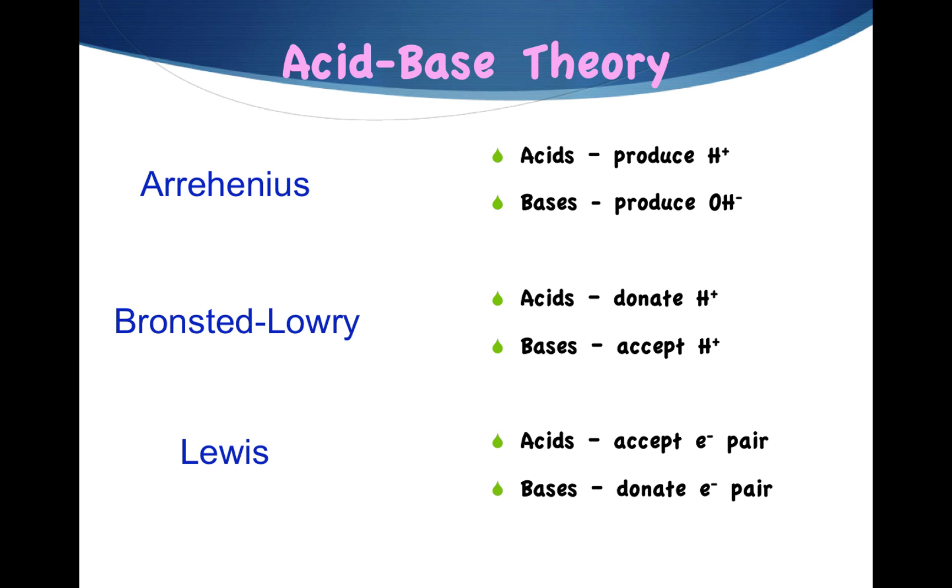The last theory is Lewis' theory. An acid, according to Lewis' theory, is an electron pair acceptor. A base is an electron pair donor. We're not going to focus a lot of attention on Lewis' theory. It's just important that you know that there are three different theories to describe acid and base behavior.